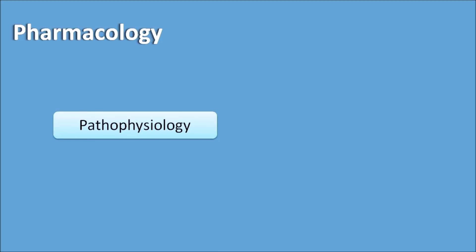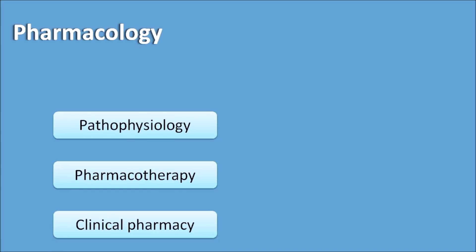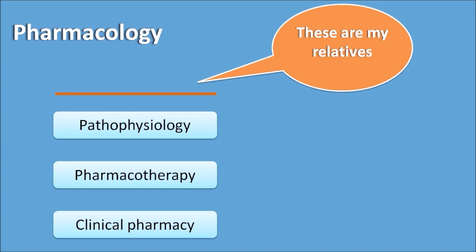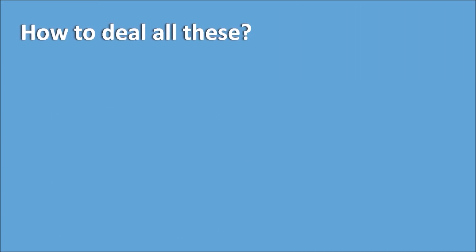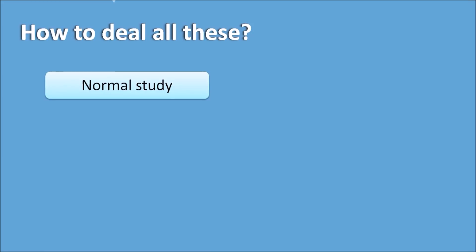Pharmacology has related subjects like pathophysiology, pharmacotherapy, and clinical pharmacy. In pathophysiology you study the main cause of a disease; in pharmacotherapy you study how drugs should be used in patients; in clinical pharmacy the focus is on diagnosis and dosage adjustment in particular disease conditions. All these are essential to learn pharmacology and get a good score in the GPAD.